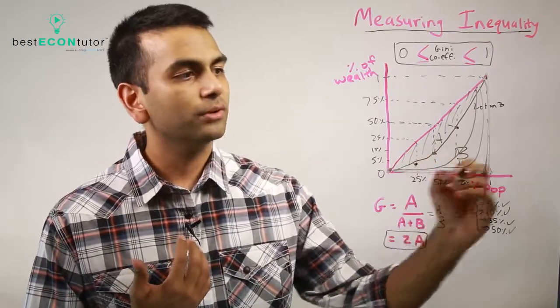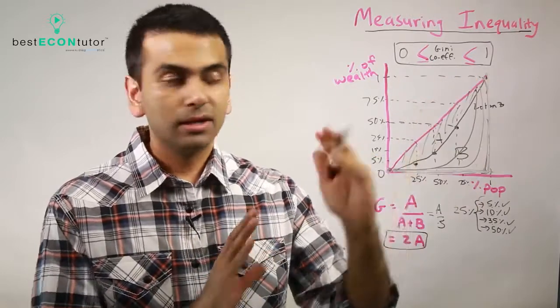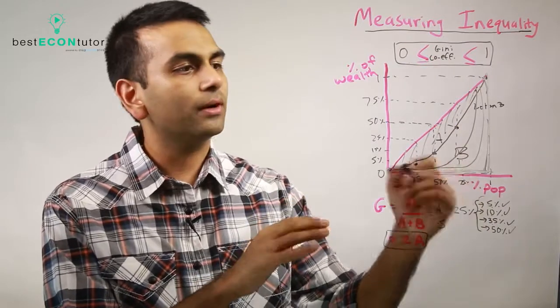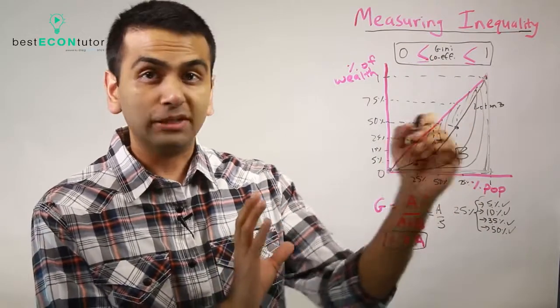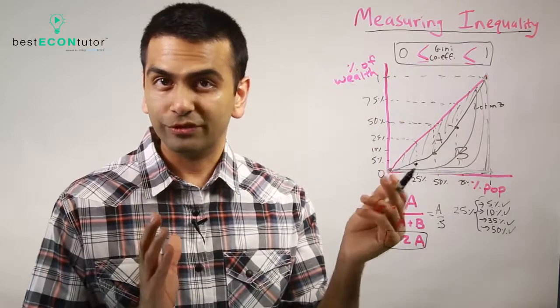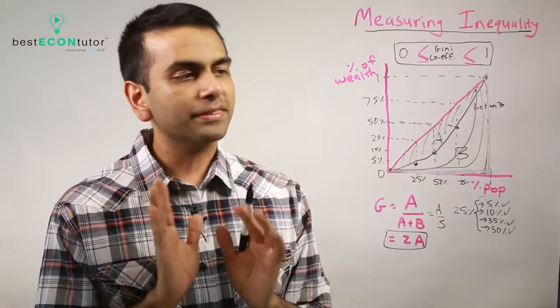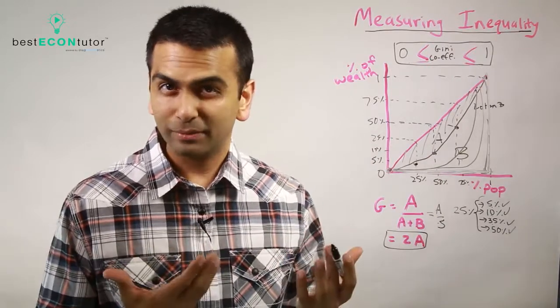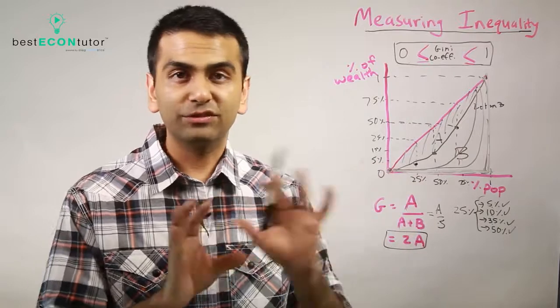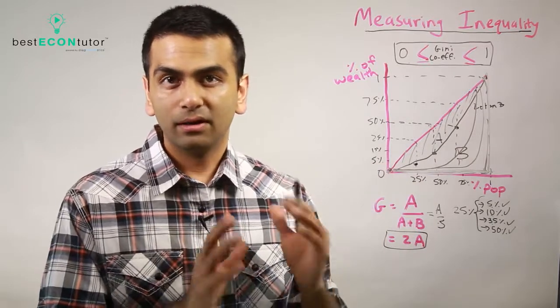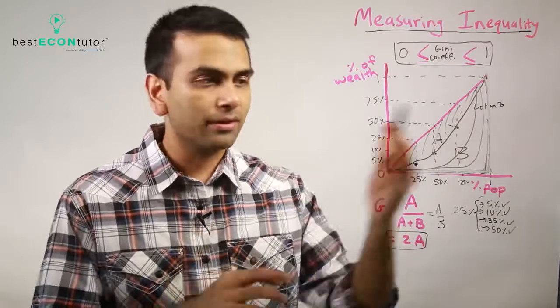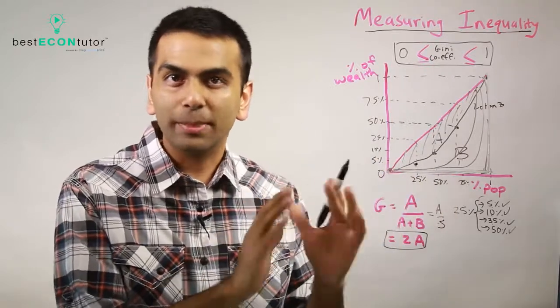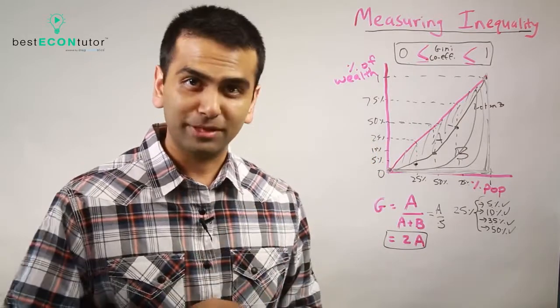In general, remember that the closer to that extreme point, the more unequal you are. The closer to the line of perfect equality, the more equal you are and the lower your Gini coefficient. One thing to keep in mind: it doesn't tell you the wealth level—how much money you actually have. You can't compare how much money is in different countries based on Gini coefficient alone. It just tells you within that country how much wealth is concentrated with the top. That's what Gini is measuring.